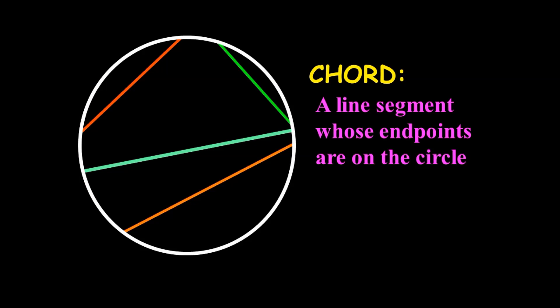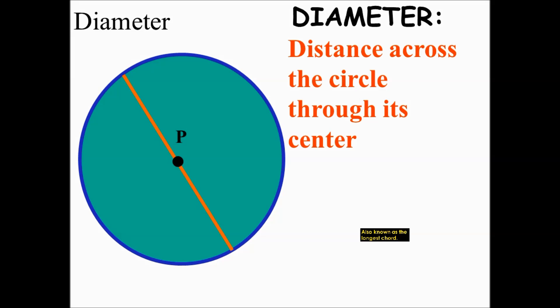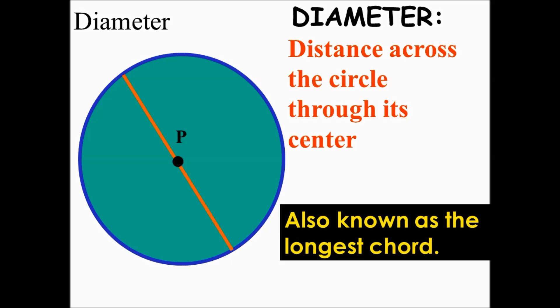A chord is a line segment whose end points are on the circle. The diameter is the distance across the circle. It is also known as the longest chord.